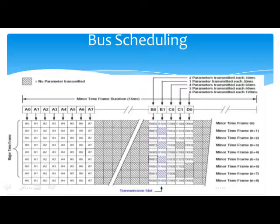ARINC 825 added transmission scheduling to the CAN specification. This is a mechanism for guaranteeing that specific types of data are transmitted with a guaranteed frequency. The system architect will assign a certain bandwidth to each device such that the total bandwidth of the system is sufficient to handle the data that needs to be transferred. Bandwidth is assigned in terms of bytes per minor frame time. Each device will determine how best to use its assigned bandwidth by sending time-critical data more frequently than less time-critical data.